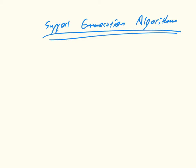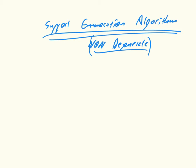We're only going to define it for non-degenerate games. Considering only non-degenerate games makes it a bit easier, and we only need to consider supports of the same size. The algorithm goes like this, and I'll do an example to walk us through.